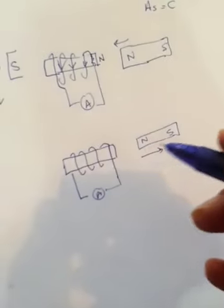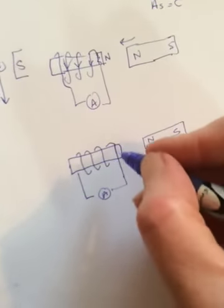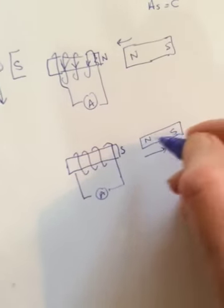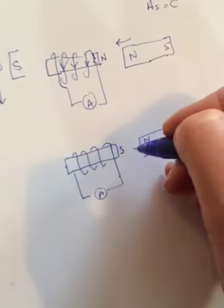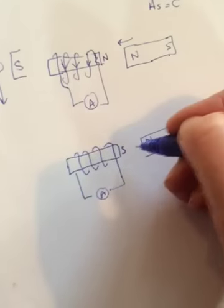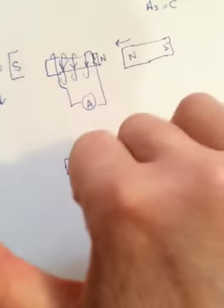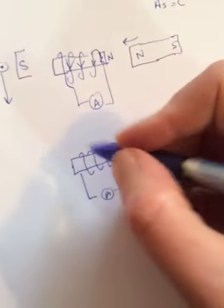But now the wire's like, wait, wait, the field's getting weaker, we don't want that. So now the current's going to turn around and flow in the other direction to try to, because it doesn't like a change in field, even if it's the change that it was just protesting against up here. So now it doesn't want it to go away. And so now it wants a south on this side, so it's going to need to flow up in the front.